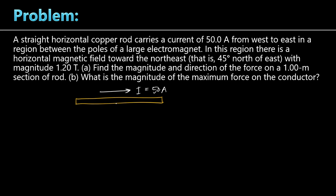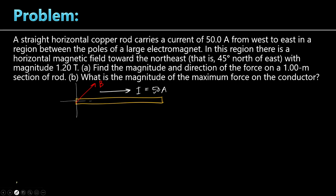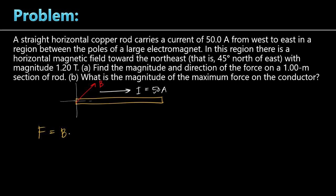The conductor is between the poles of a large electromagnet, and there is a horizontal magnetic field directed toward the northeast — at 45 degrees north of east. We draw the magnetic field vector B at 45 degrees and the current vector I along the conductor. The force formula for a current-carrying conductor is F equals BIL sine of theta, which can also be written as a cross product: F equals I times L cross B. Theta is the angle between the IL vector and the magnetic field B.